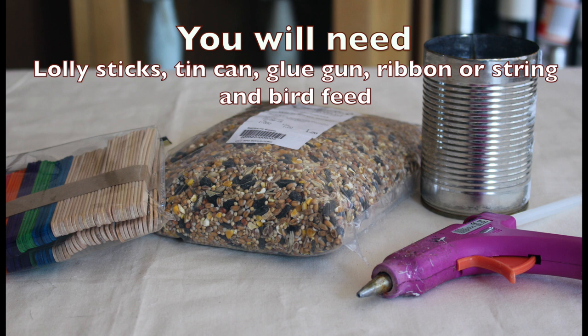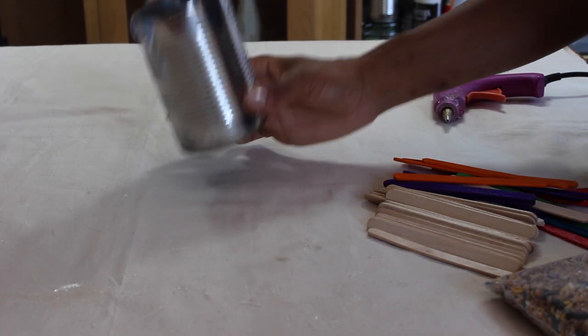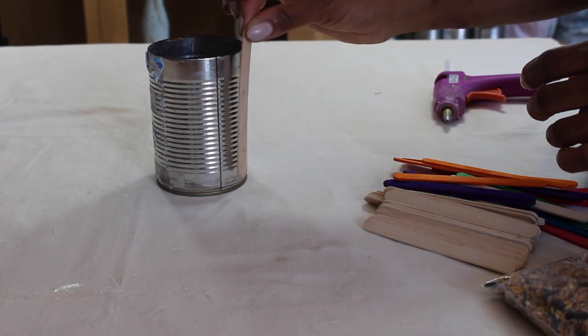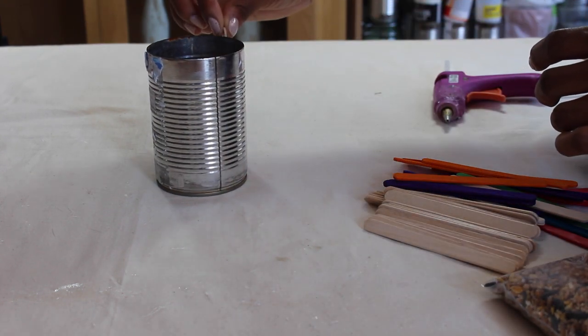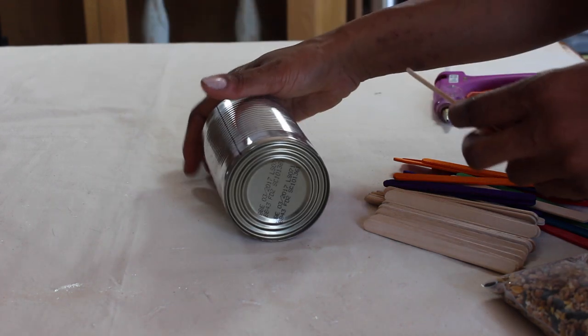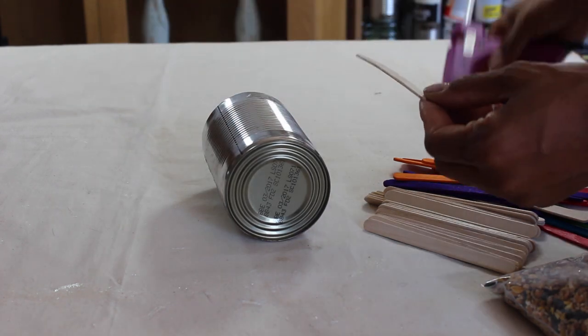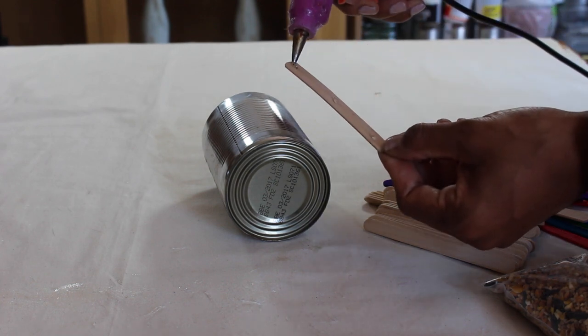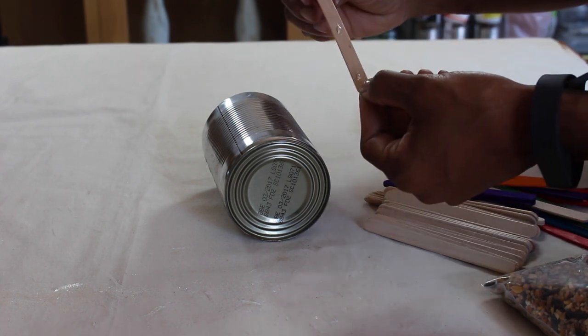Now onto the second bird feeder. So this is another really simple design. All we're going to do is on the tin can, we're going to stick lollipop sticks all the way around. I'm going to use a little bit of a pattern just to make it look a bit interesting, and we'll glue them all the way around, and that literally is it.